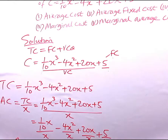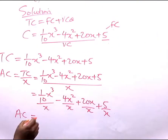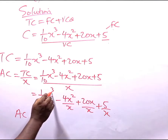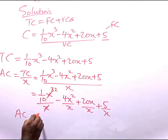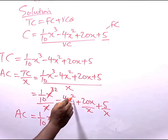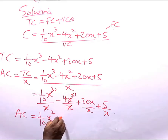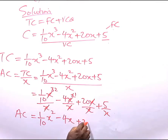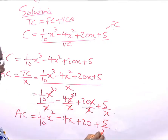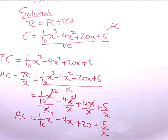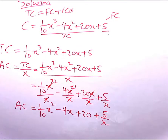So our average cost, applying the laws of indices, when we divide X³ by X we get X². So average cost = (1/10)X² — then 4X² divided by X leaves us with -4X — then 20X divided by X leaves us with +20 — and then 5 divided by X gives us +5/X. So our average cost function is (1/10)X² - 4X + 20 + 5/X. That is clear — this is the average cost function.